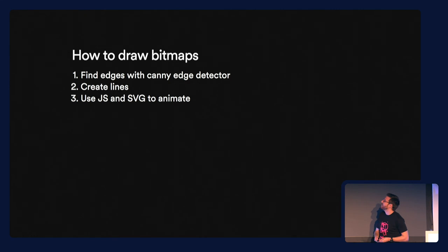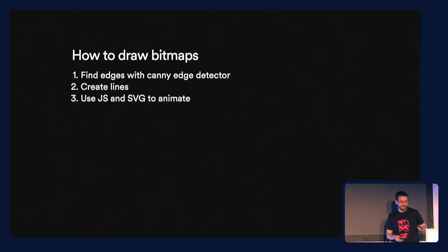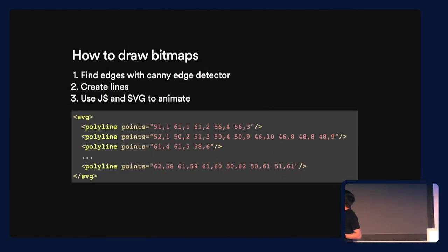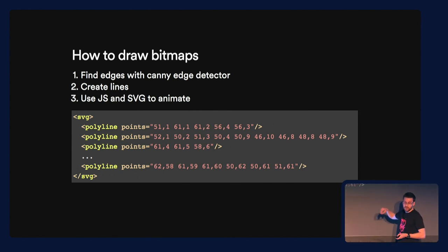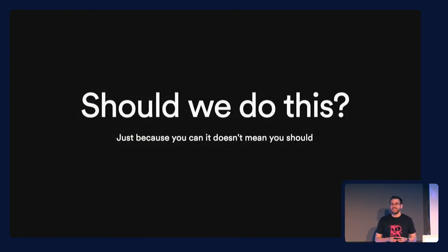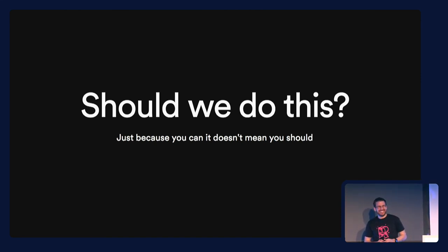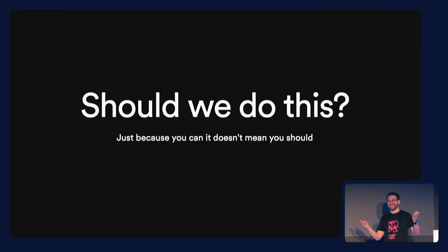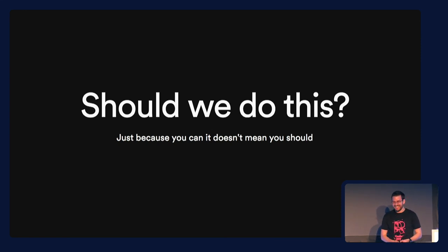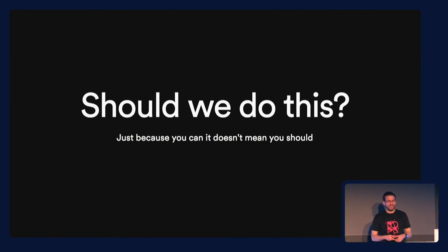The way this works is: you find the edges, create SVG lines, and animate them using JavaScript. I chose polylines — a set of points that draw lines across them — but you can also use paths. Should we do this? I don't know. I see people using JavaScript for creating lots of things: terminals, code editors, even operating systems in JavaScript. I think if it's possible, someone will do it. All in all, it's something fun, and it's interesting that we try out these techniques and push what we know.